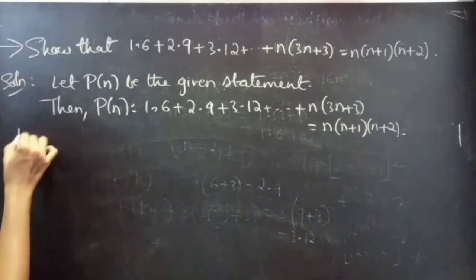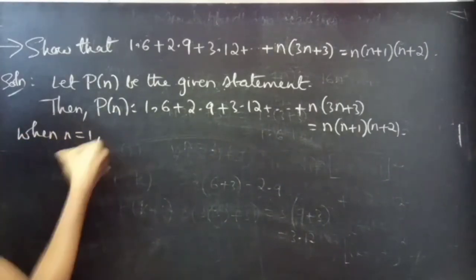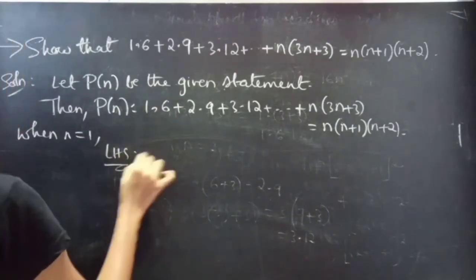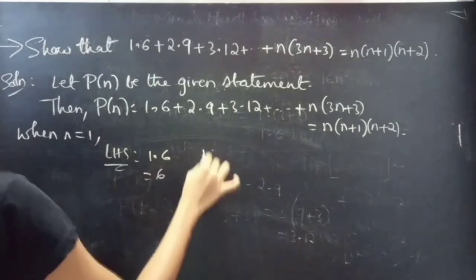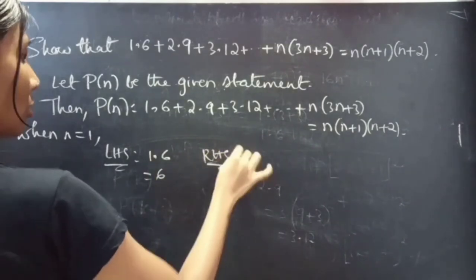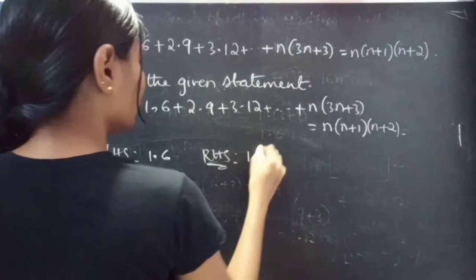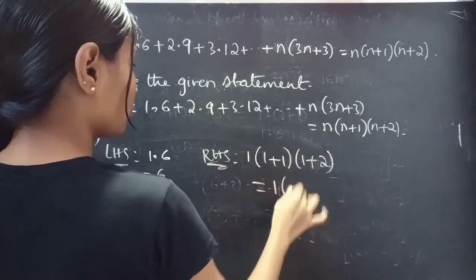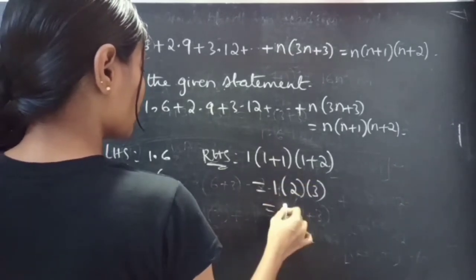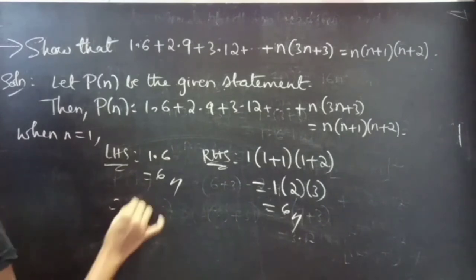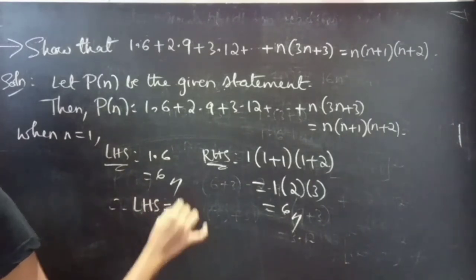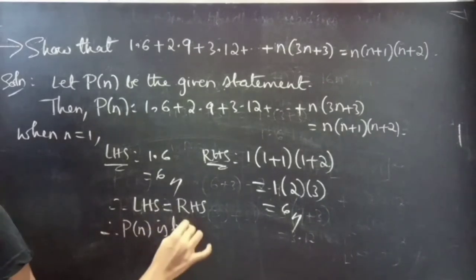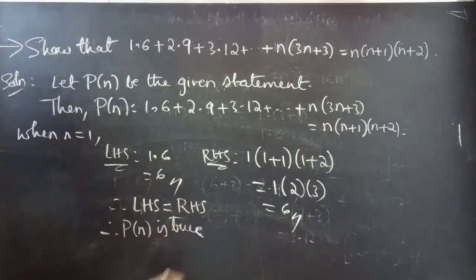When n equals to 1, we take the first term from LHS: 1 into 6 equals to 6. From RHS, substituting n equals to 1: 1 into 1 plus 1 into 1 plus 2 equals 1 into 2 into 3, which is 6. So LHS equals to RHS. Therefore, the statement is true for n equals to 1, and P(1) is true.